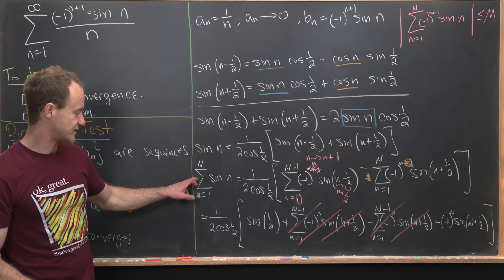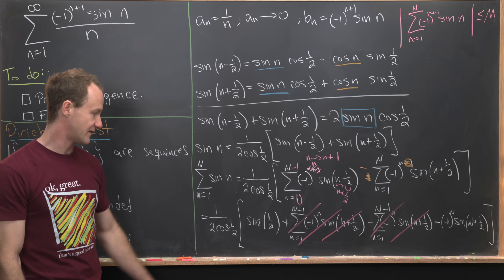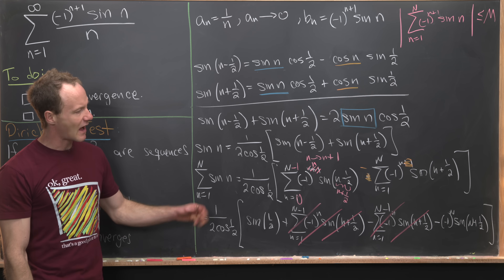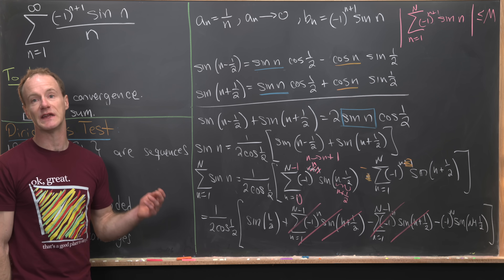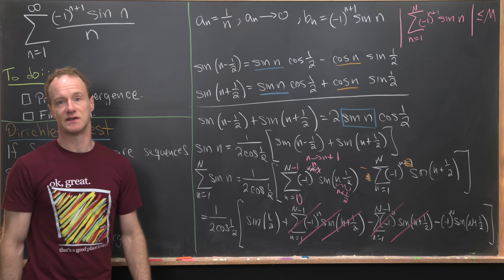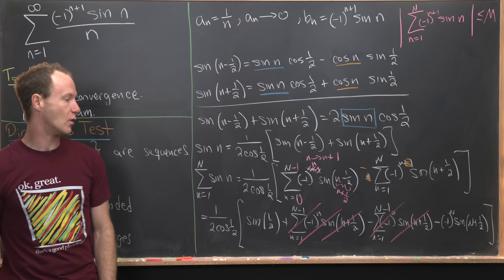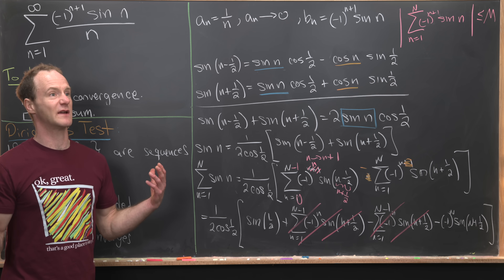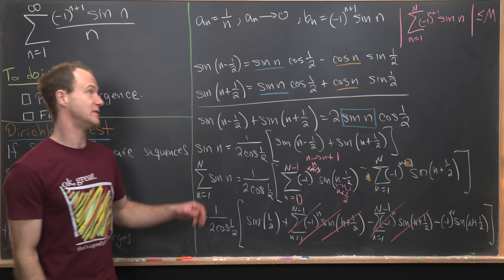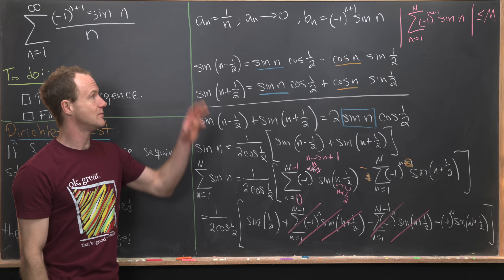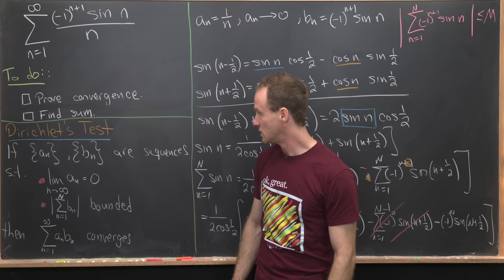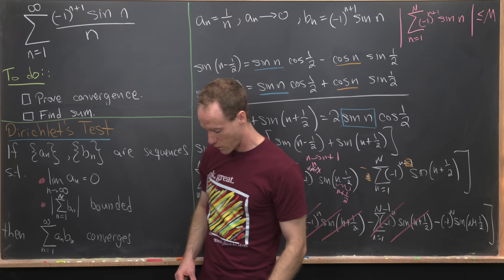This partial sum is clearly bounded: the first term is a fixed number, and minus 1 to the N times sine of N plus 1/2 is always between negative 1 and positive 1. So you can overshoot it and say the whole thing is bounded between minus 20 and plus 20, meaning capital M can be taken as positive 20. We have now satisfied the hypotheses of Dirichlet's test, which tells us that our series converges.